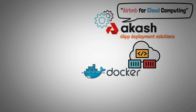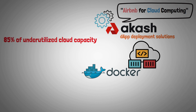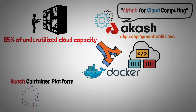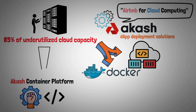The open-source Docker engine and container technology are used by Akash Network. The project leverages 85% of underutilized cloud capacity in global data centers by applying these technologies. The Akash container platform is then utilized to host applications by developers using these computational resources.